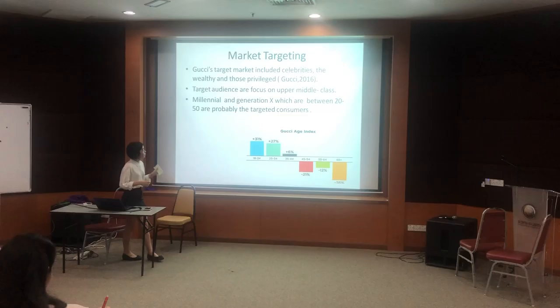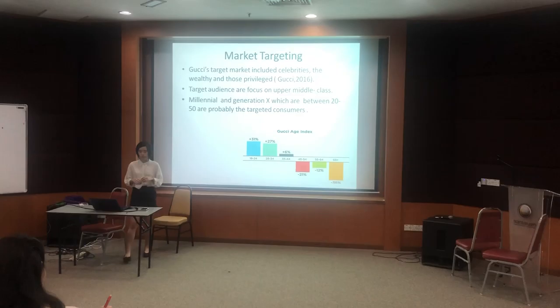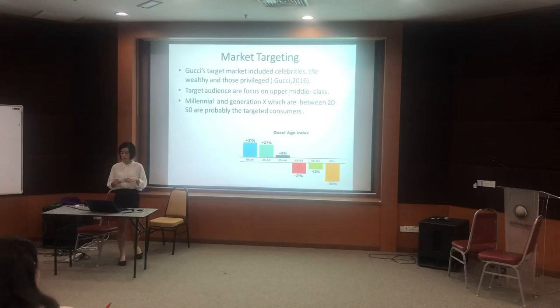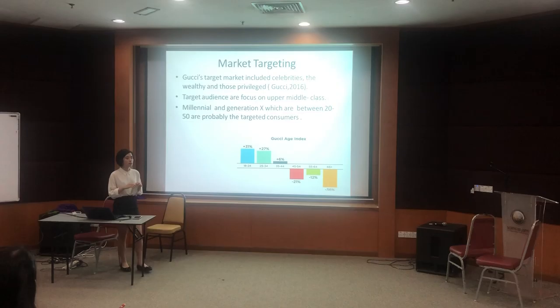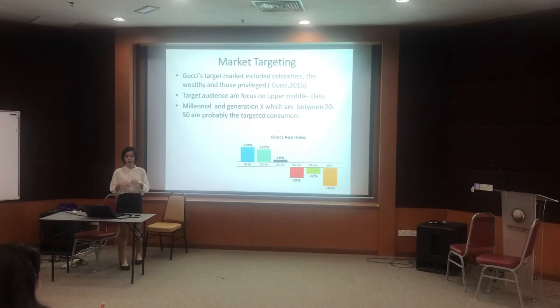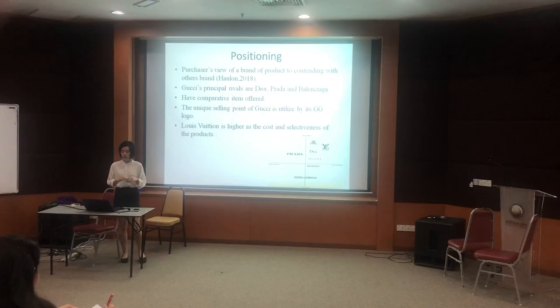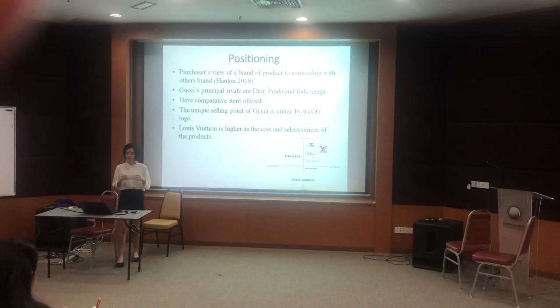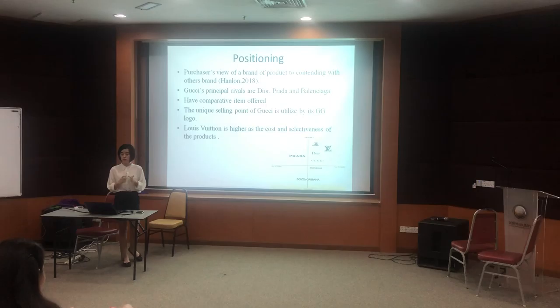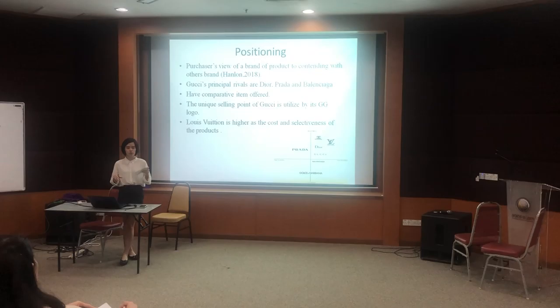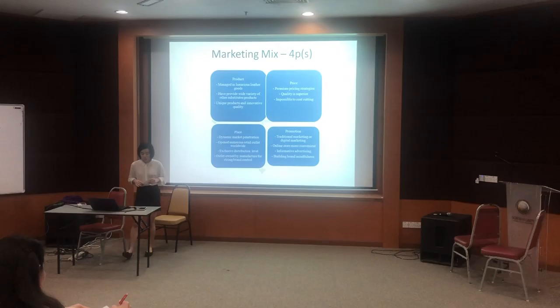In market targeting, Gucci will concentrate on demographic segmentation because the target market includes celebrities, the wealthy, and those privileged. The target audience is focused on the upper-middle class because the cost is pricey. Recently, Gucci Company has added a new product line which is the children's collection. Therefore, ages 20 to 50, which is Generation X, will probably be the targeted consumers. Regarding positioning, Gucci's main competitors are Fendi and Prada because they offer competitive items and similar target consumers. LV is at a higher level compared with Gucci in terms of cost and exclusiveness, but Gucci has their unique selling point — the GG logo — that can be easily recognized by consumers.